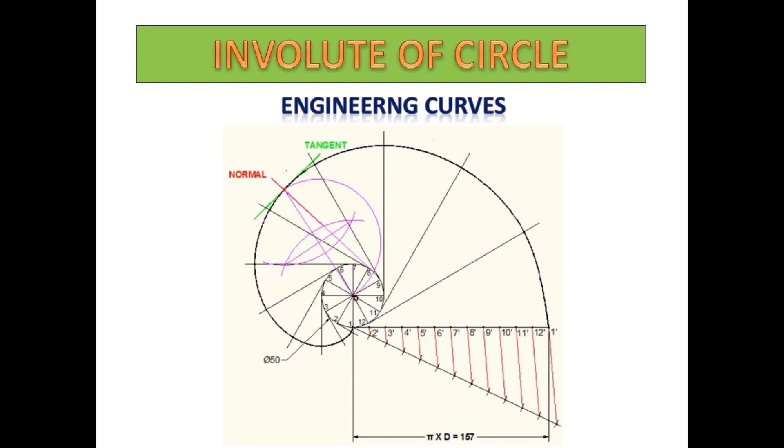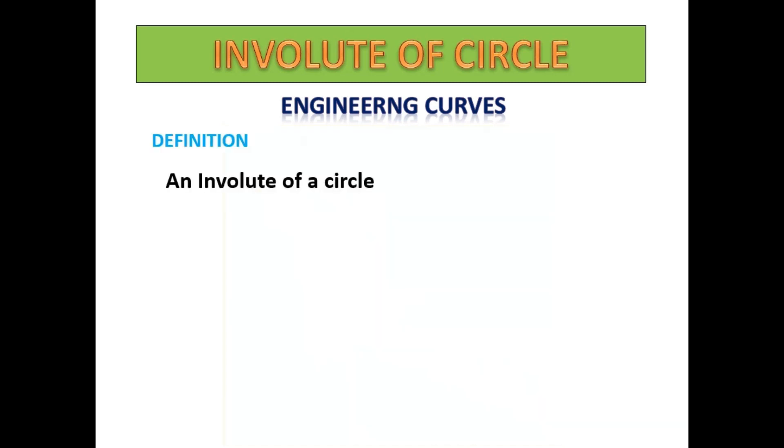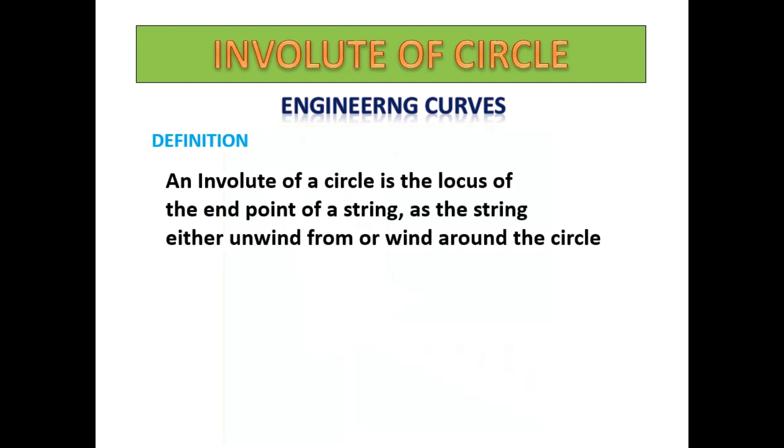This video explains the construction procedure for involute of a circle. An involute of a circle is the locus of the end point of a string as the string either unwinds from or winds around the circle.